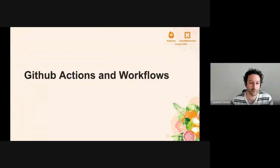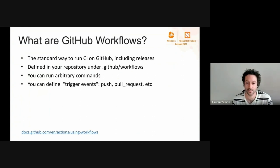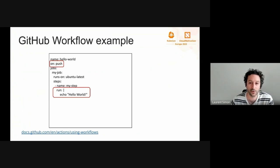Now let's talk about GitHub workflows and GitHub Actions. Many projects are natively developed on GitHub, so it would be great if we could also generate SLSA provenance on GitHub — and this is the motivation behind this part of the presentation. On GitHub, the standard technology for running CI is GitHub workflows and GitHub Actions. Whether you want to run simple unit tests, end-to-end integration tests, or release pipelines, you can do all this using GitHub workflows and Actions. Typically, you define GitHub workflows by creating a file under .github/workflows in your repository. You can run arbitrary commands and define triggers — for example, on an incoming pull request, a push to a branch, or when a new tag is created.